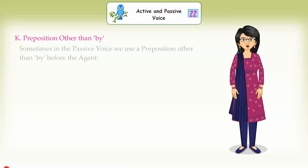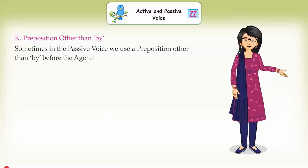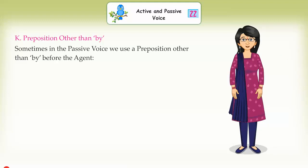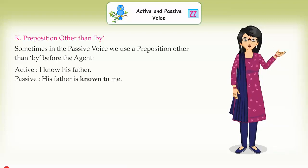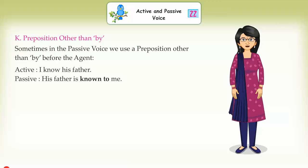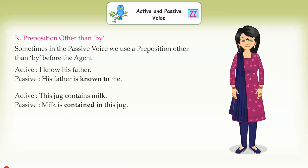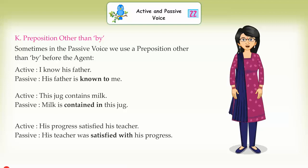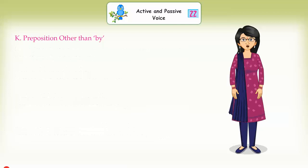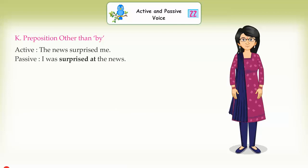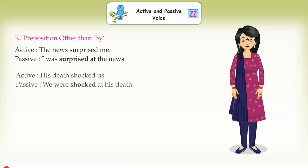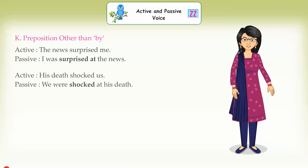Prepositions other than 'by': sometimes in the passive voice we use a preposition other than 'by' before the agent. Active: 'I know his father.' Passive: 'His father is known to me.' Active: 'This jug contains milk.' Passive: 'Milk is contained in this jug.' Active: 'His progress satisfied his teacher.' Passive: 'His teacher was satisfied with his progress.' Active: 'The news surprised me.' Passive: 'I was surprised at the news.' Active: 'His death shocked us.' Passive: 'We were shocked at his death.'